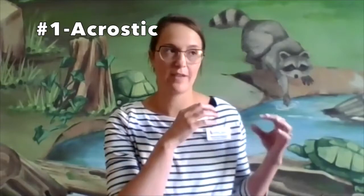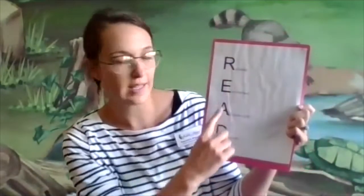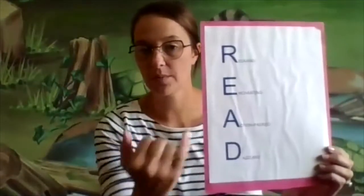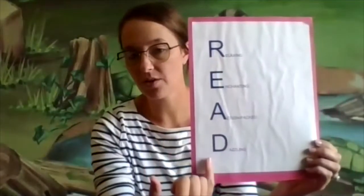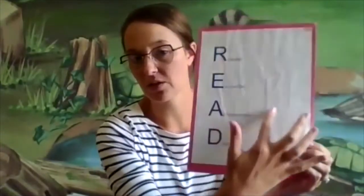The first type of poetry we're going to talk about is acrostic poetry. Acrostic poetry is where you have a poem where certain letters in each line spell out a certain word or a phrase. The example I have — since I work in a wonderful library — I use the word "read." So it's R-E-A-D, and when you create an acrostic poem with that word, you come up with a word or phrase that can be spelled using those letters.